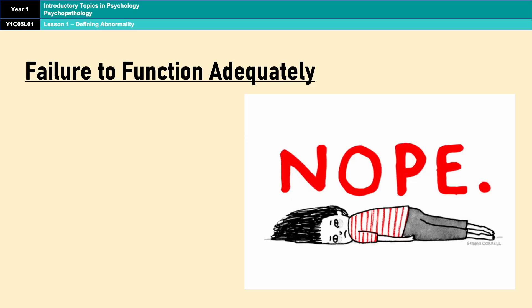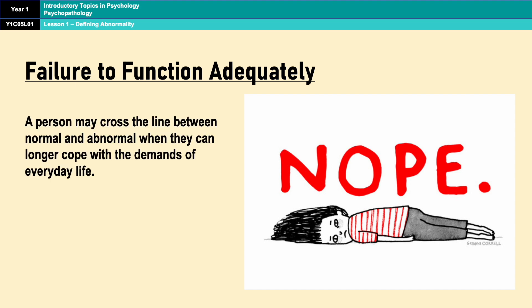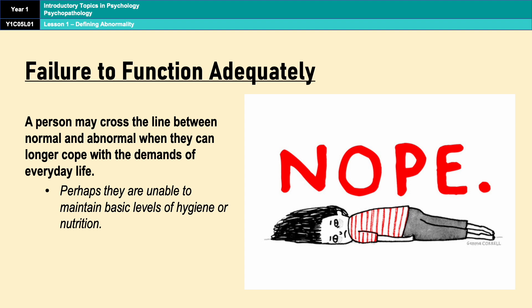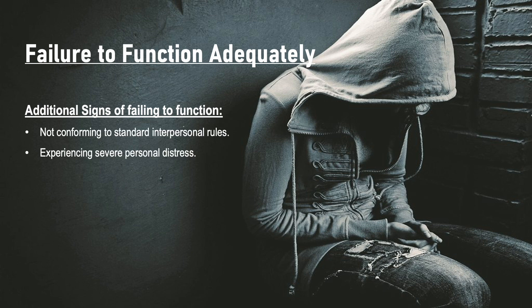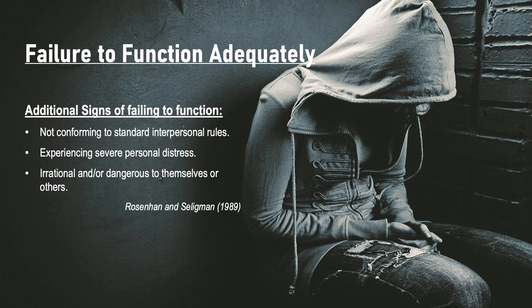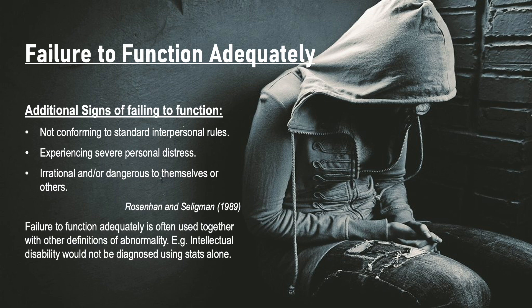Our third definition of abnormality is failure to function adequately. This definition suggests that people are abnormal if they can no longer cope with the demands of everyday life. General indications could include an inability to maintain work or relationships, or an inability to look after yourself. Rosenhan and Seligman suggest additional signs, including not conforming to standard interpersonal rules, experiencing severe personal distress or being distressing to others, and being irrational or a danger to yourself or others. It's also important to note that failure to function adequately is often used together with other definitions — for example, intellectual disability disorder would not be diagnosed using statistical infrequency alone; failure to function adequately would also be considered.